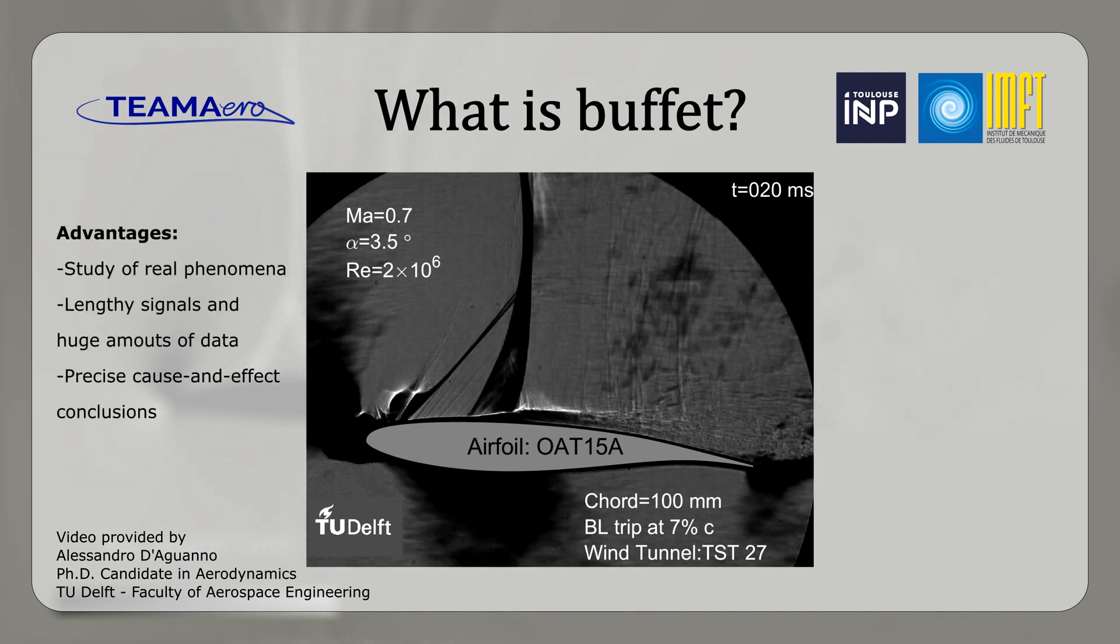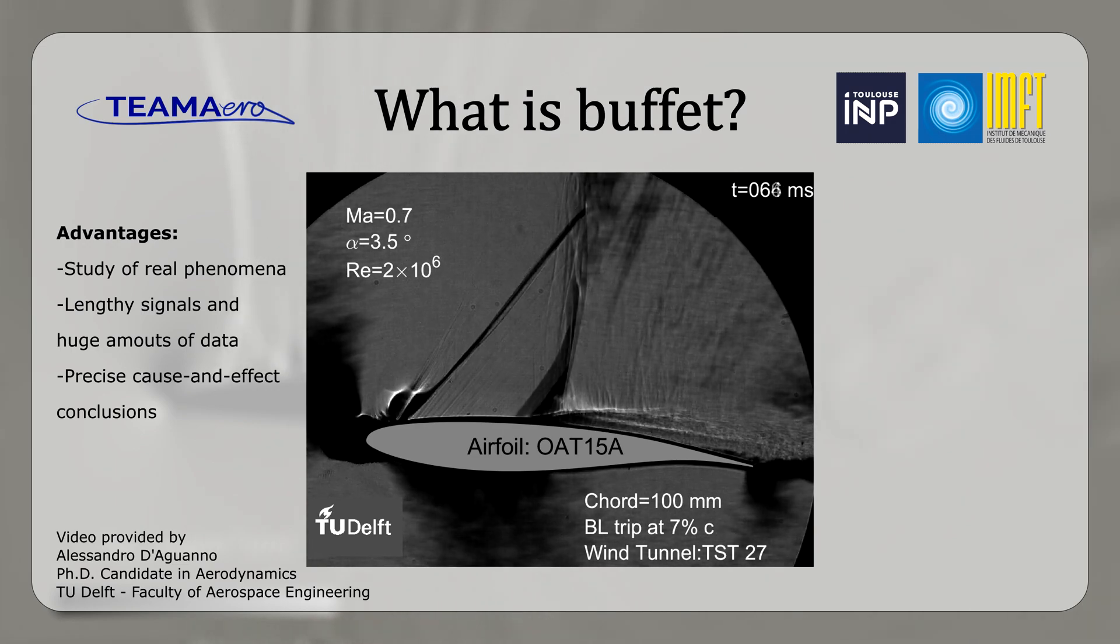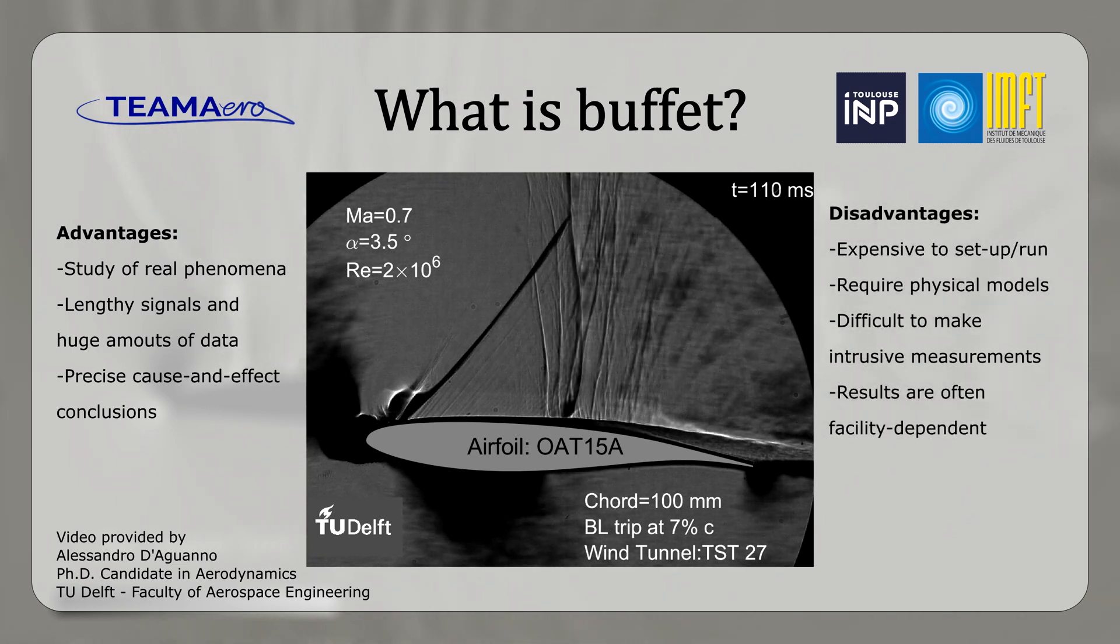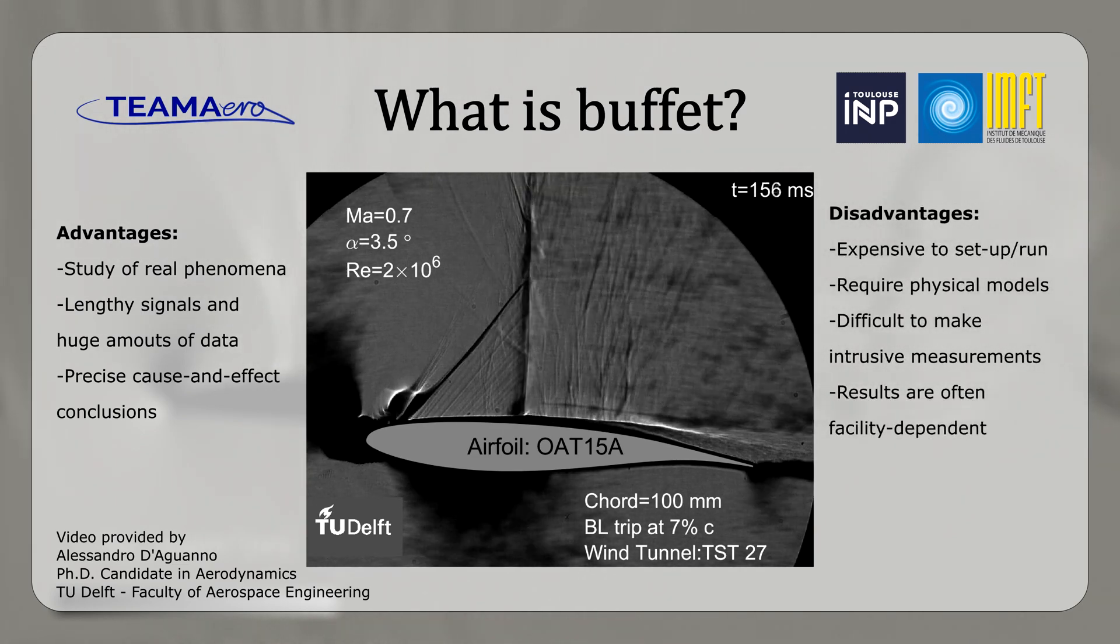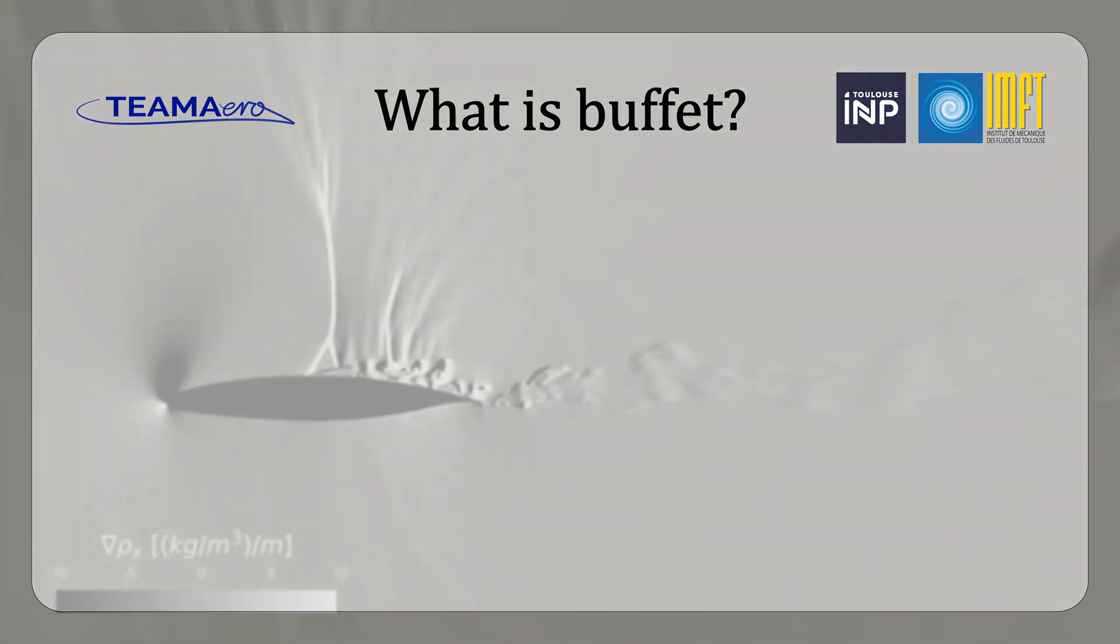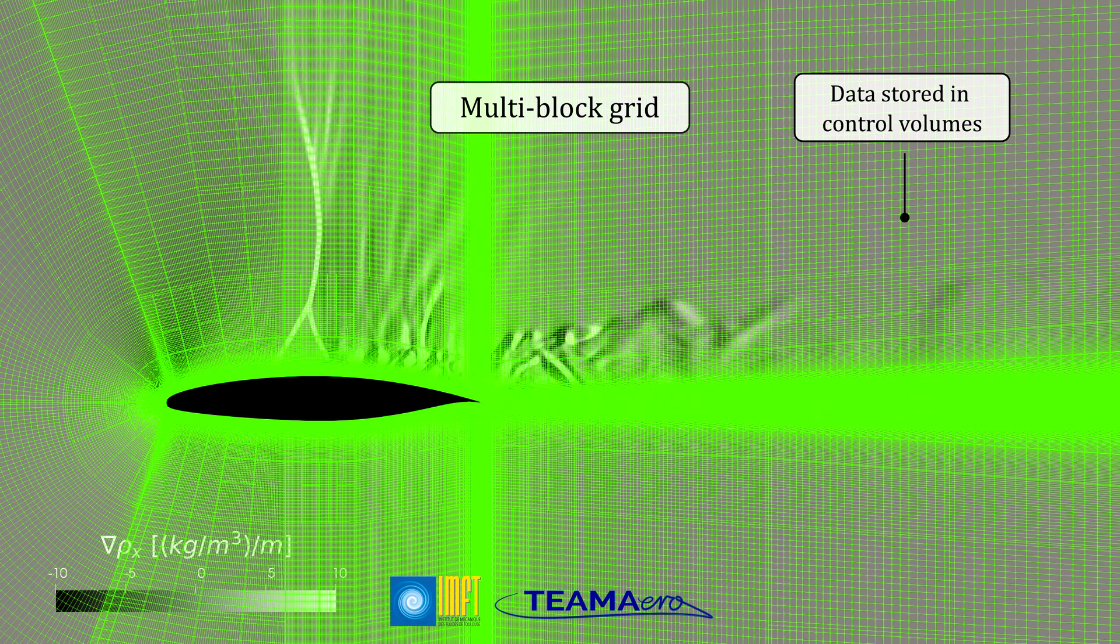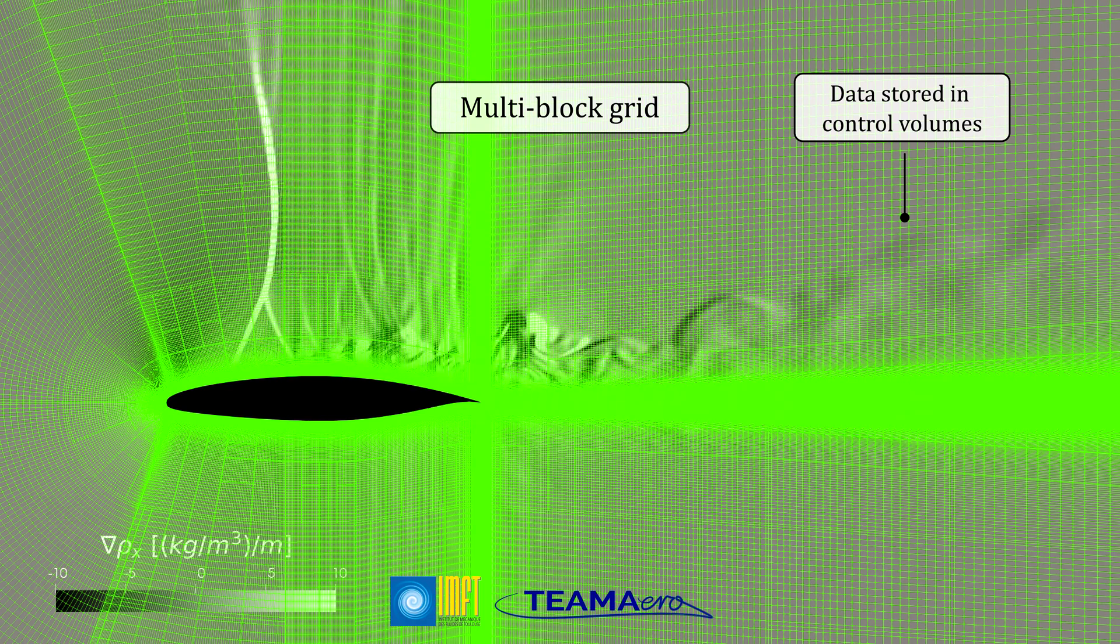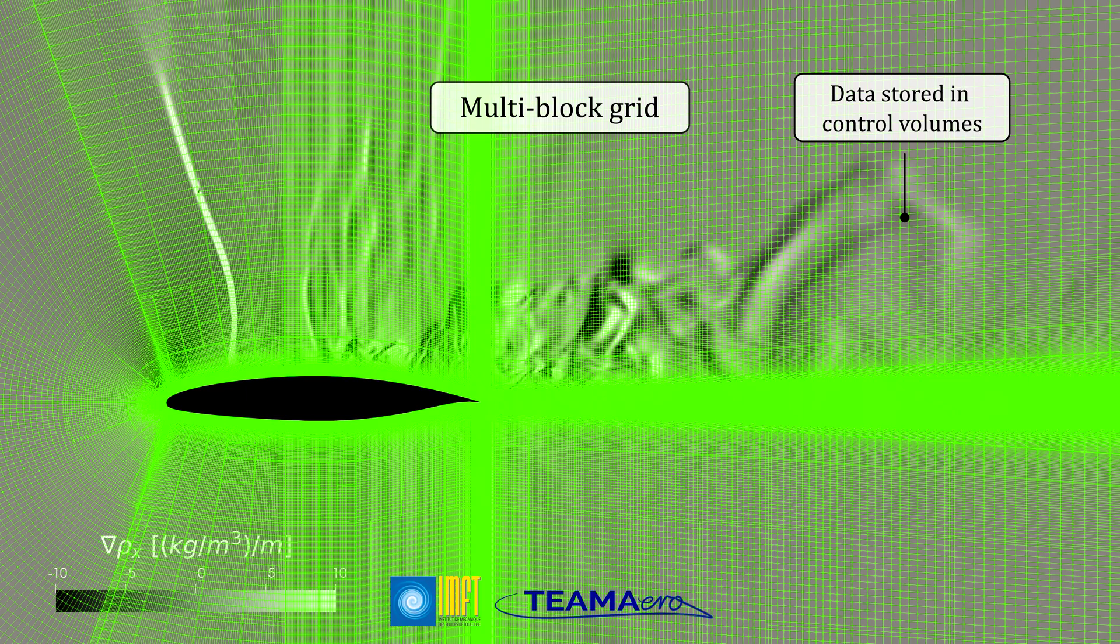The main advantage of experiments is that they show the real phenomena. However, it is quite challenging to obtain quantitative data by taking measurements from the flow field without being too intrusive. This is where computational fluid dynamics excel, because we can easily access our data by extracting the flow variables from our computational grid.